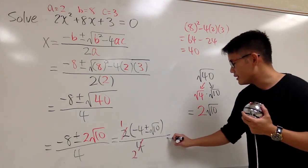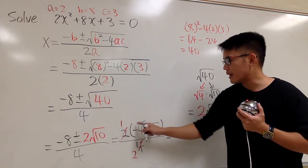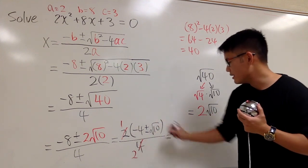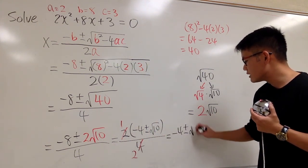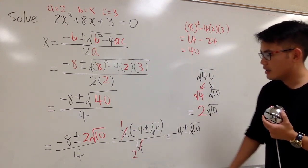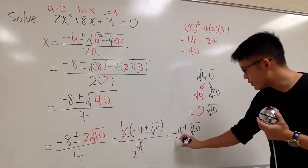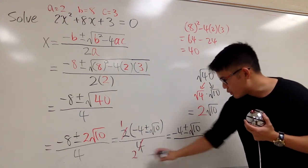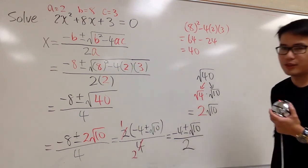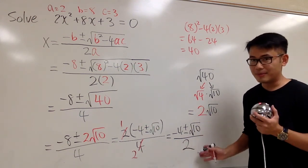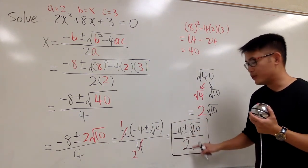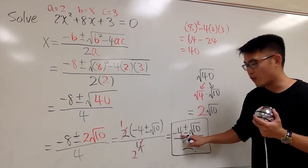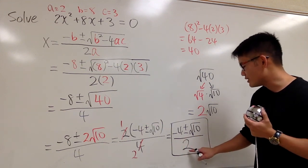This is the final answer: negative 4 plus or minus square root of 10, all over 2. Do not do anything else — do not reduce the 2 and the 4 further, and do not reduce the 2 and the 10. This is it.